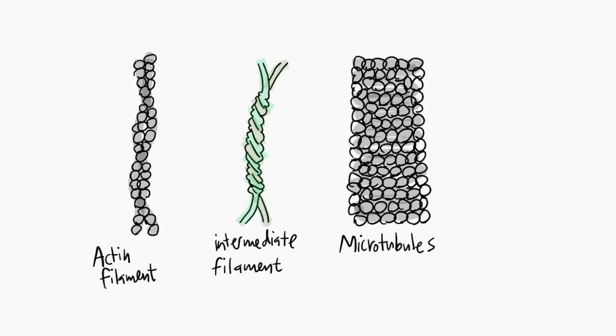Another abundant structure in the cytoskeleton is the intermediate filaments. They play a similar role as the other two mentioned as well. With that out of the way, let's talk about movement.